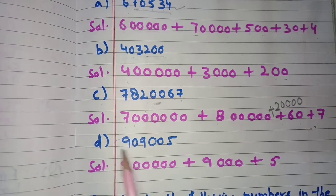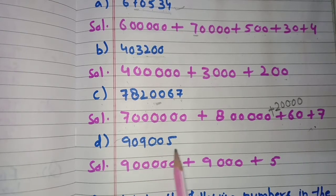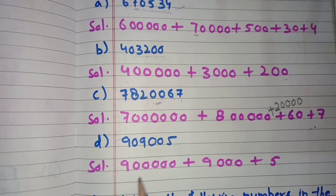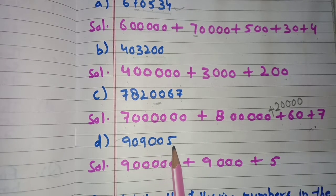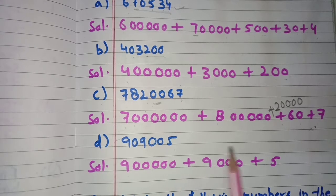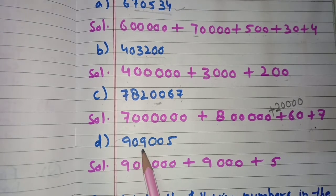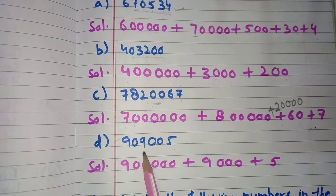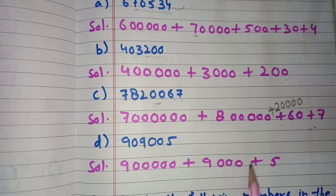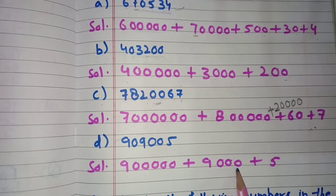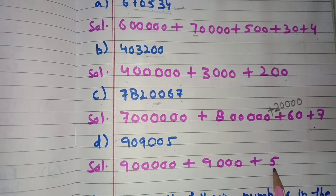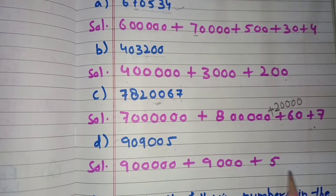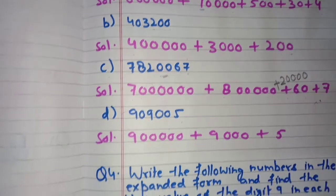Part D is 9,09,005. Nine has 5 digits after it, so place value is 9,00,000 (nine lakh). Zero is skipped. The second 9 is at the Thousands place with 3 digits after it, so its place value is 9,000. Zeros are skipped. Five is at the Ones place. The expanded form is: 9,00,000 + 9,000 + 5.